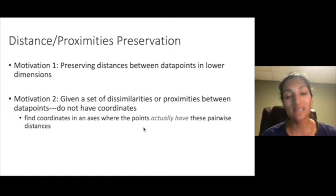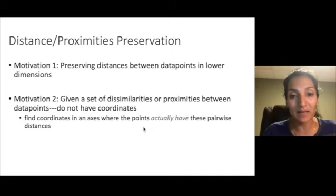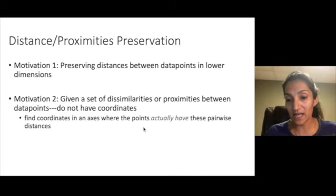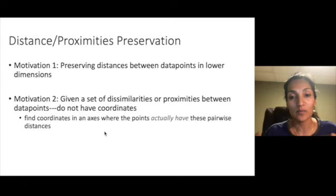The second set of motivations could be that we actually don't have any kind of space in which the data lies at all. The data points don't have coordinates and they came as a set of dissimilarities or proximities. Now this can be the case when you have any kind of network data where you have who's connected to who, but you might not have native feature dimensions. So the task of MDS here would be to find axes where the points actually have those distances.